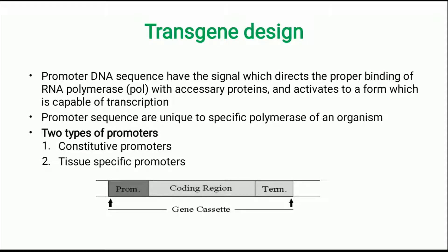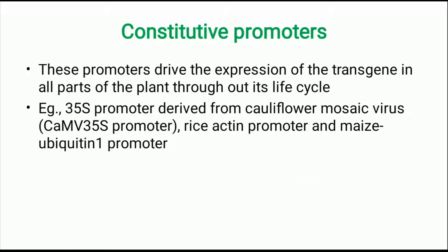Two types of promoters exist. The first is called constitutive promoters and the second is called tissue specific promoters. Constitutive promoters drive the expression of the transgene in all parts of the plant throughout its life cycle. Examples include the 35S promoter derived from cauliflower mosaic virus, the flies actin promoter, and the maize ubiquitin promoter.